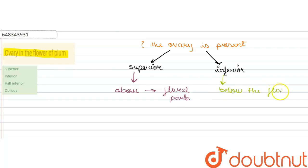Now the ovary of plum - in plum, the ovary in the flowers of the plum is half inferior, meaning that it lies in the center of the floral parts.